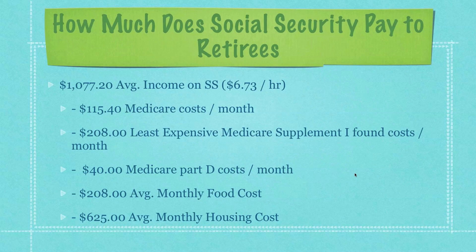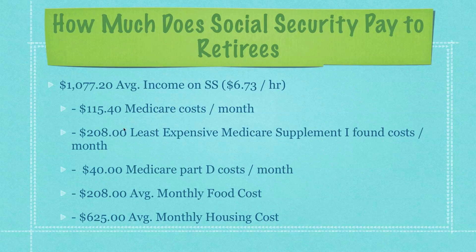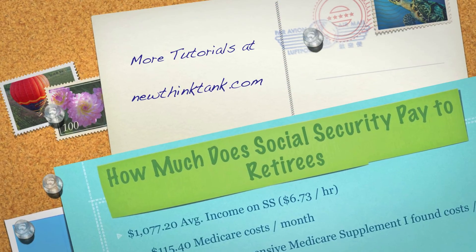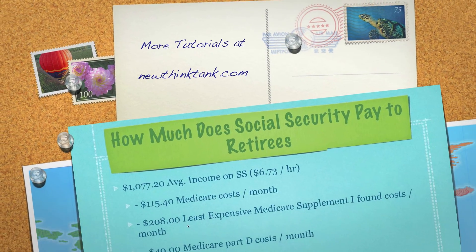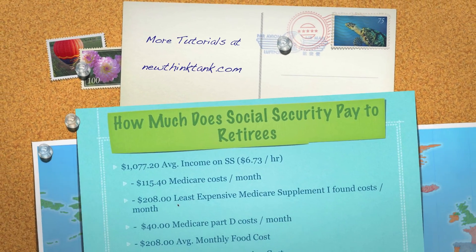I have a whole presentation on Social Security and Medicare, but I keep getting asked this question so I'll cover it again. The average U.S. citizen receives $1,077.20 per month on Social Security when they retire, which works out to $6.73 per hour, and I show how that money is spent by senior citizens monthly. If you have any other questions or comments, leave them in the comment section below. Till next time.